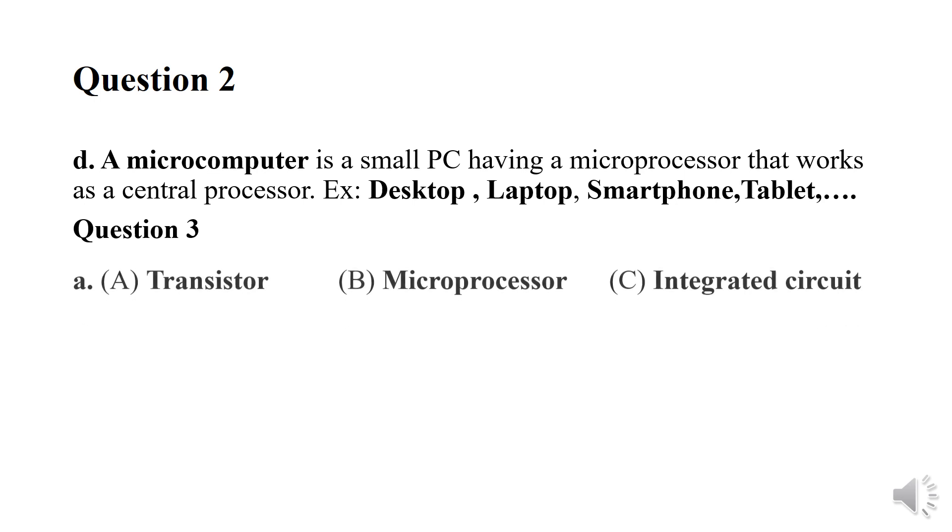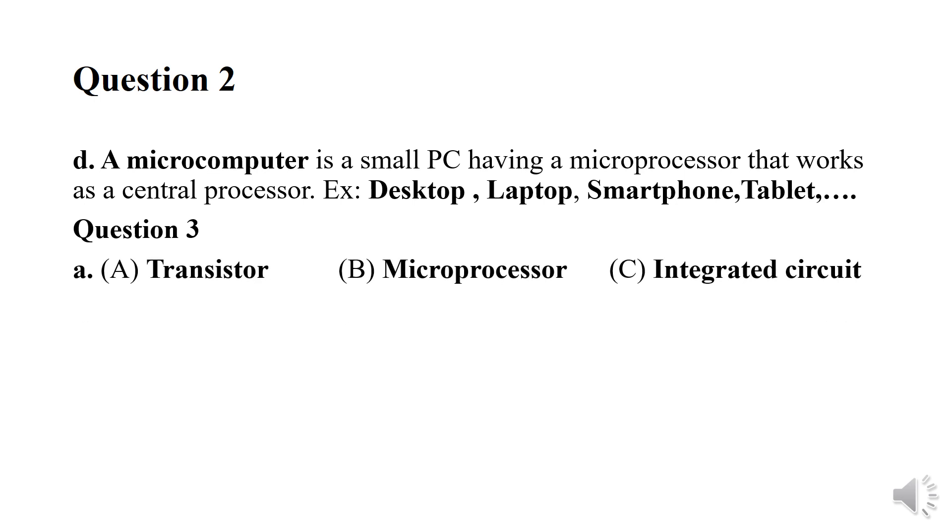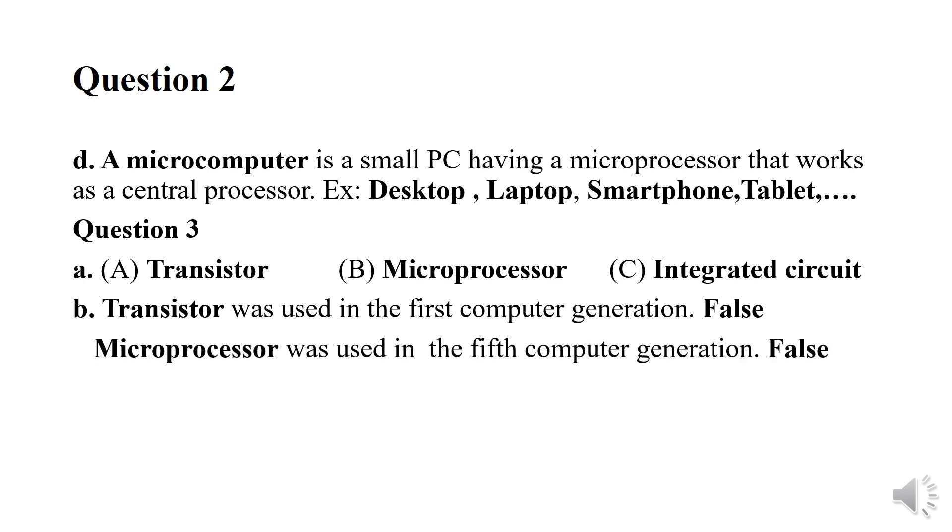Question number three. A. Capital A shows transistor, capital B shows microprocessor, capital C shows integrated circuit. B. Transistor was used in the first computer generation. This is false because in the first computer generation vacuum tubes were used. Microprocessor was used in the fifth computer generation. This is false because in the fifth computer generation the technology used was artificial intelligence. Integrated circuit was used in the third computer generation. This is true.